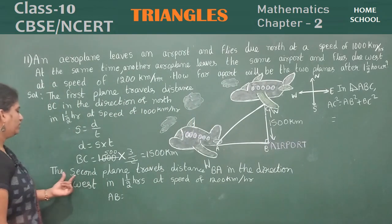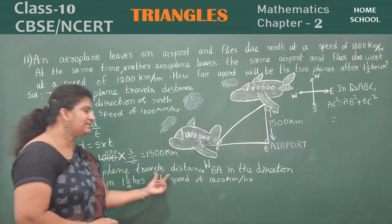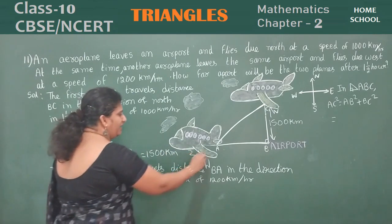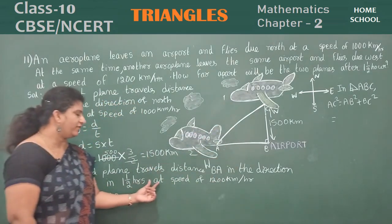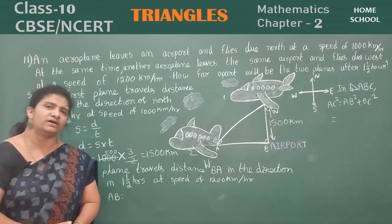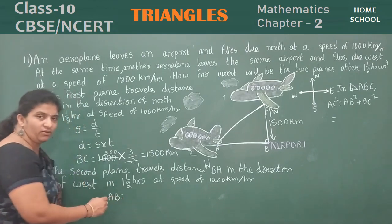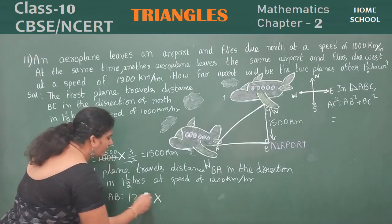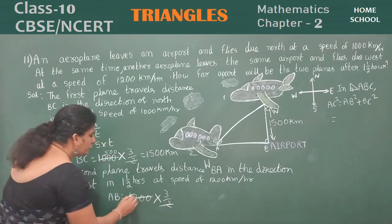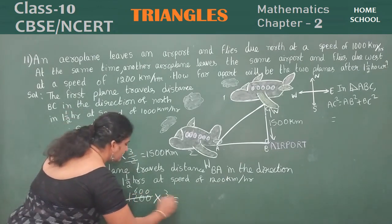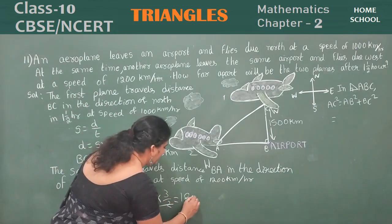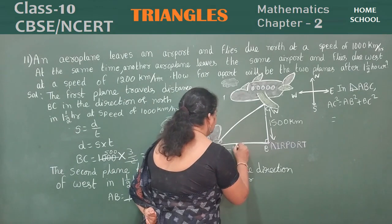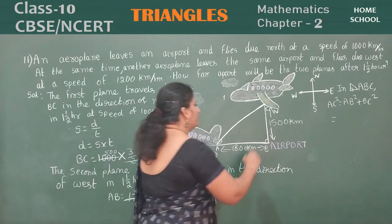The second plane travels distance AB in the direction of west in one and a half hours at a speed of 1200 kilometers per hour. Same formula: distance = speed × time. AB = 1200 × 3/2 = 1800 kilometers. The distance AB is 1800 kilometers.